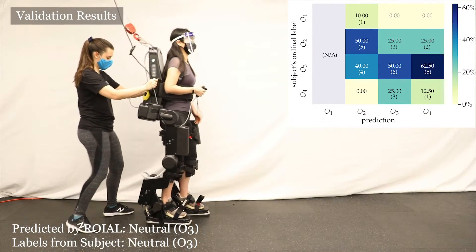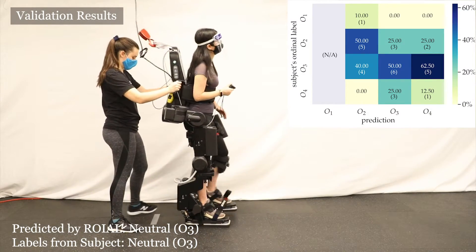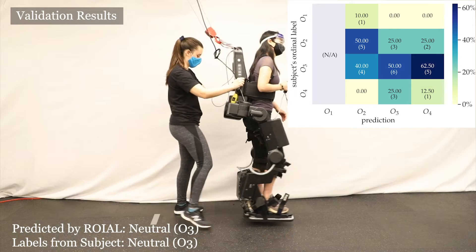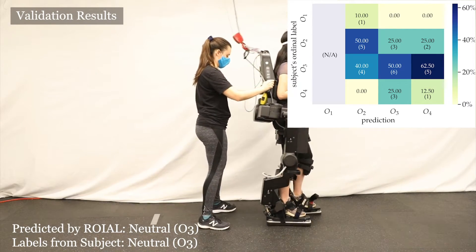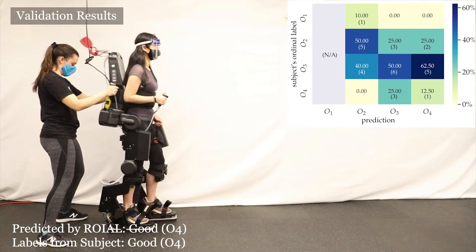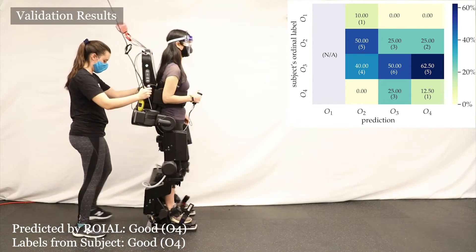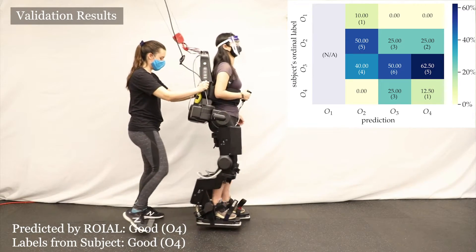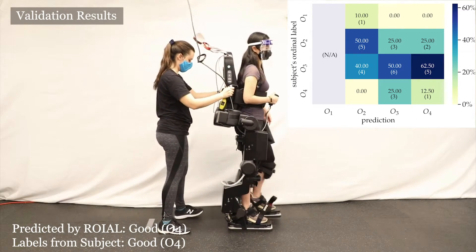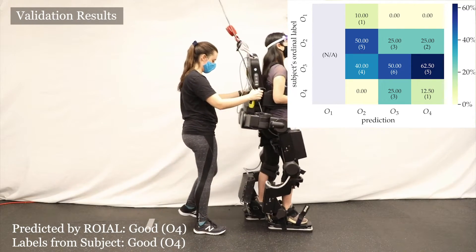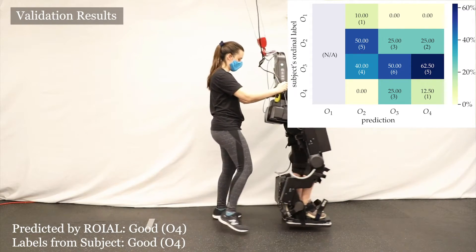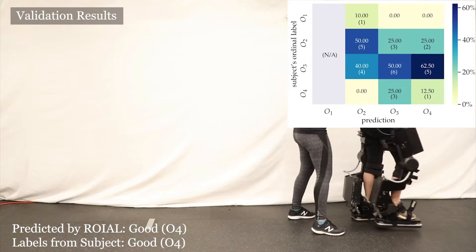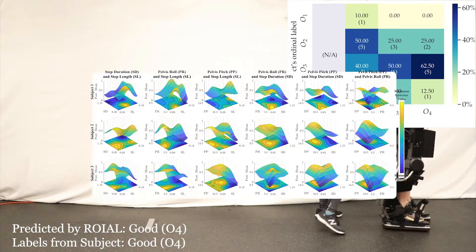Here is the confusion matrix for all three subjects' validation trials. The first column results are strong because actions outside the region of interest are purposefully avoided to prevent subject discomfort. Overall, these results suggest that ROYLE can yield reliable preference landscapes within a moderate number of samples.